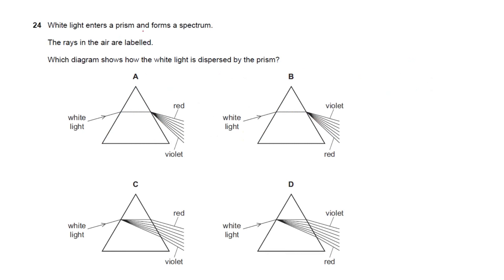Question 24: white light enters a prism and forms a spectrum. Light refracts at the surface (rarer to denser medium). Inside the prism, dispersion occurs. Using VIBGYOR: red light bends the least and violet bends the most. The correct diagram shows light refracting inside the prism with the spectrum spread accordingly.